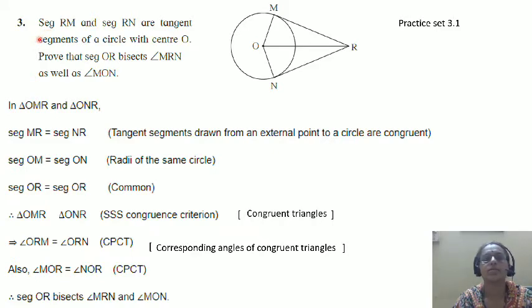Your next question. Segment RM and RN are tangent segments. O is the center of the circle. Prove that segment OR bisects angle MRN. Prove this.